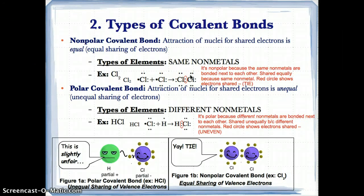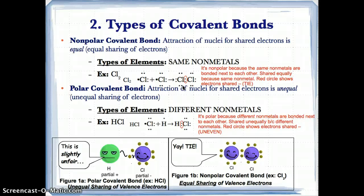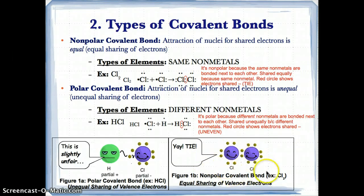There are six valence electrons in each Cl atom that are not in the middle, and two valence electrons shared in the middle. Adding them up gives eight valence electrons for each Cl atom, so each is stable with a full valence shell. This bond is nonpolar because the same nonmetal Cl is bonded to itself — neither Cl is pulling the electrons closer, so it's a tie in the tug-of-war. The electrons are shared equally since they're attracted equally to both atoms.